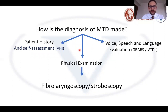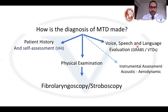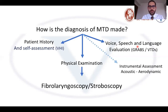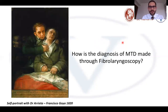The diagnosis of MTD is made through a comprehensive assessment based on three main components: patient history, physical examination — which is basically flexible laryngoscopy and stroboscopy — and the voice, speech, and language evaluation. Some institutions also use instrumental assessment such as radiology, electromyography, acoustics, and aerodynamics. The aerodynamic assessment gives us values such as subglottic pressure, transglottic flow, or laryngeal resistance.